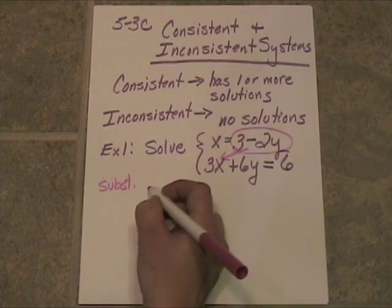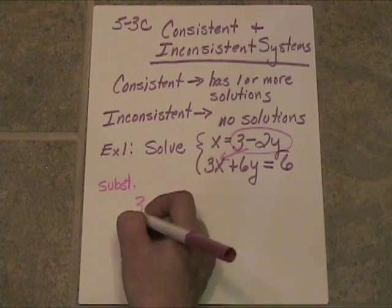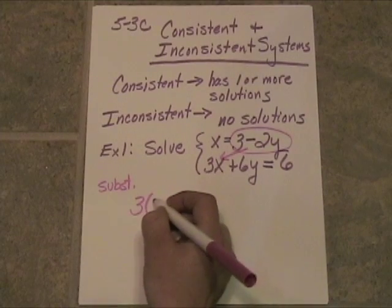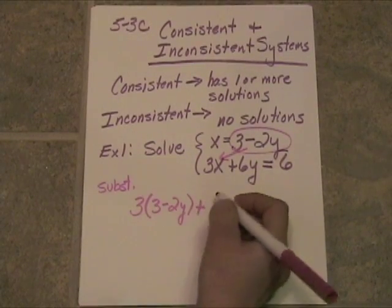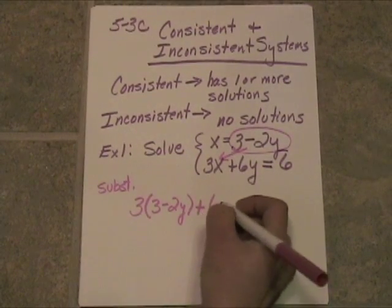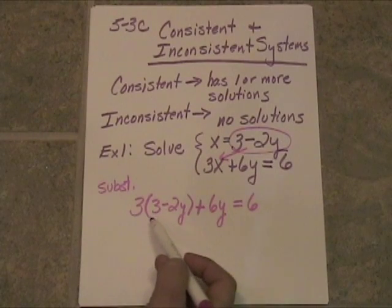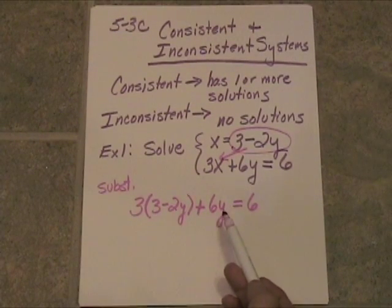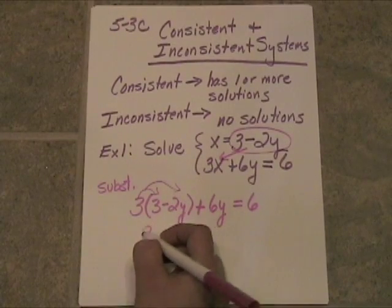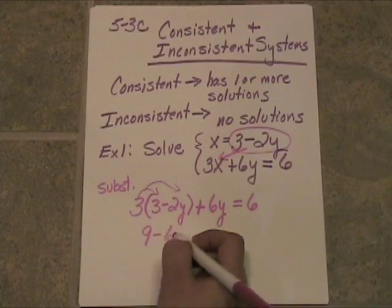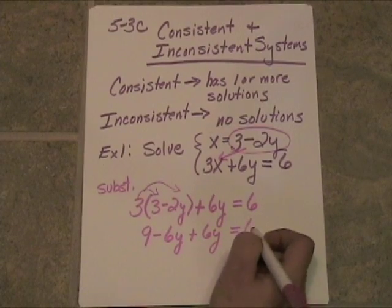All right, so let's do the substitution step. This will turn into, substituting this value for x into the second equation. We will get three times the quantity three minus two y, close quantity, plus six times y is equal to six. All right, now it's one big long ugly equation in terms of y. Let's go ahead and distribute the three, and we will get nine minus six y plus six y is equal to six.